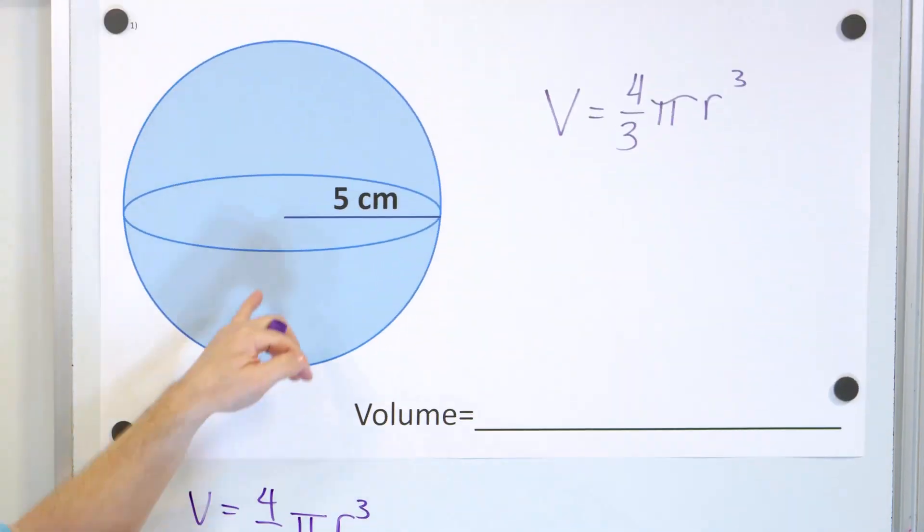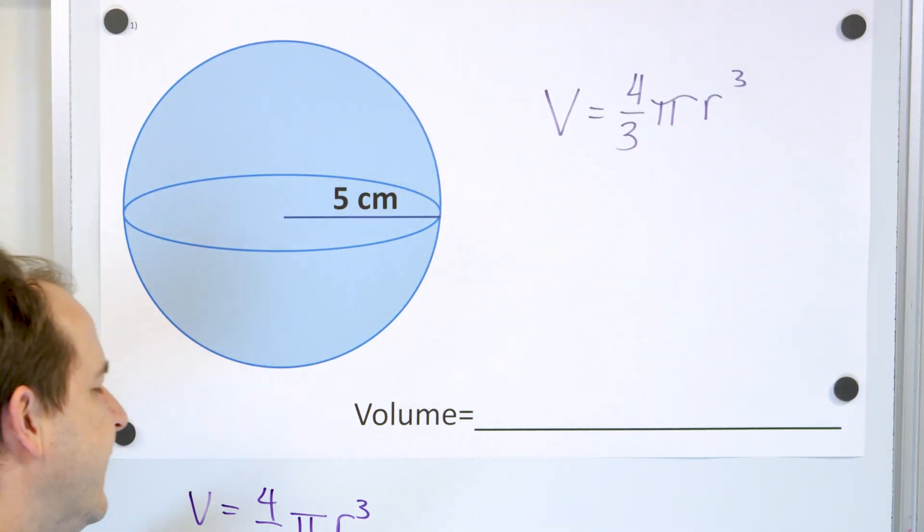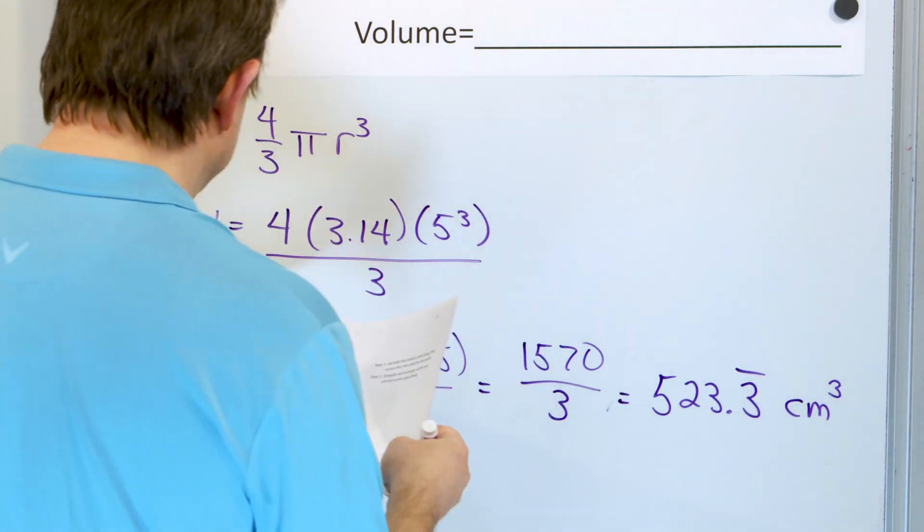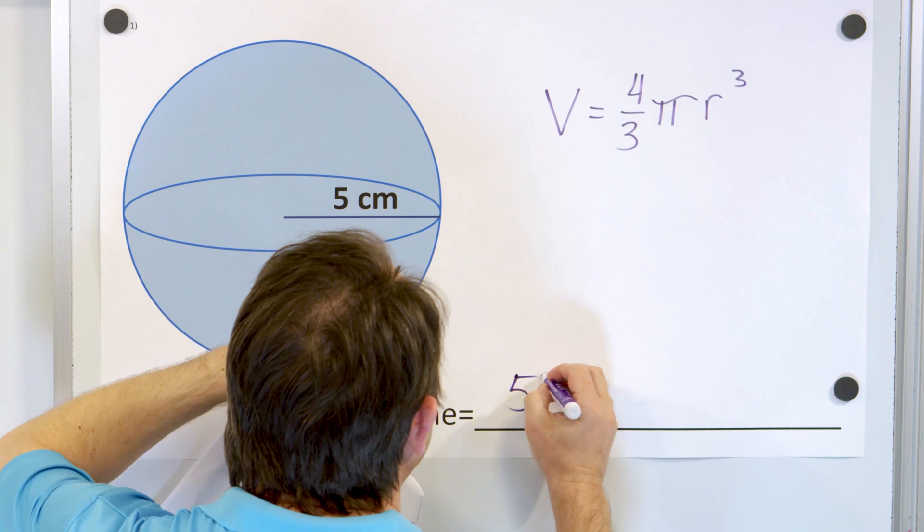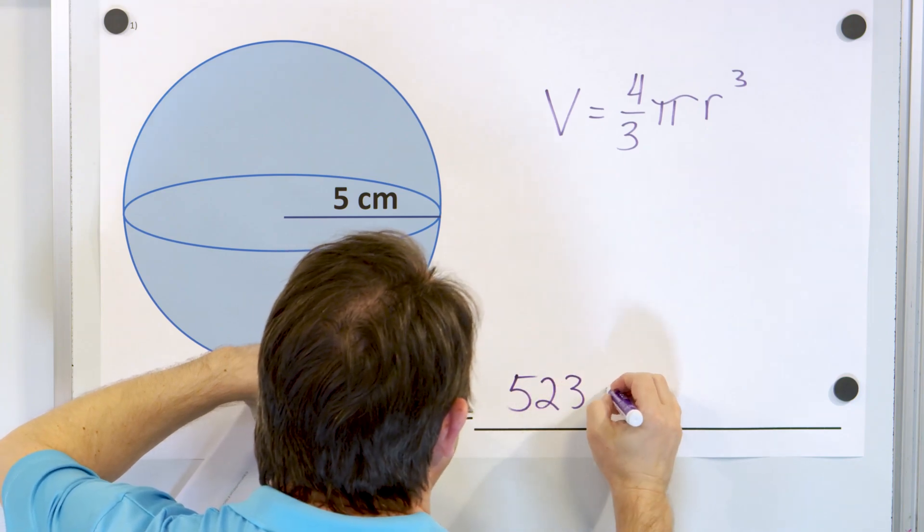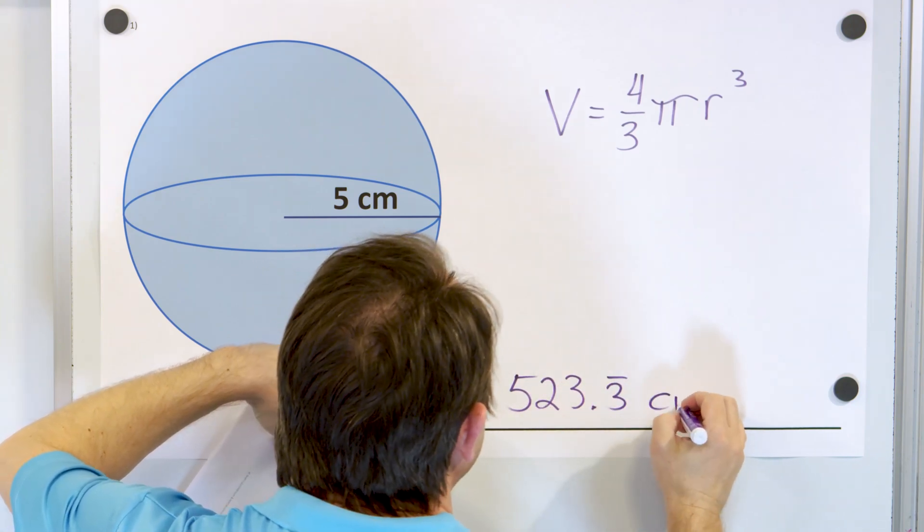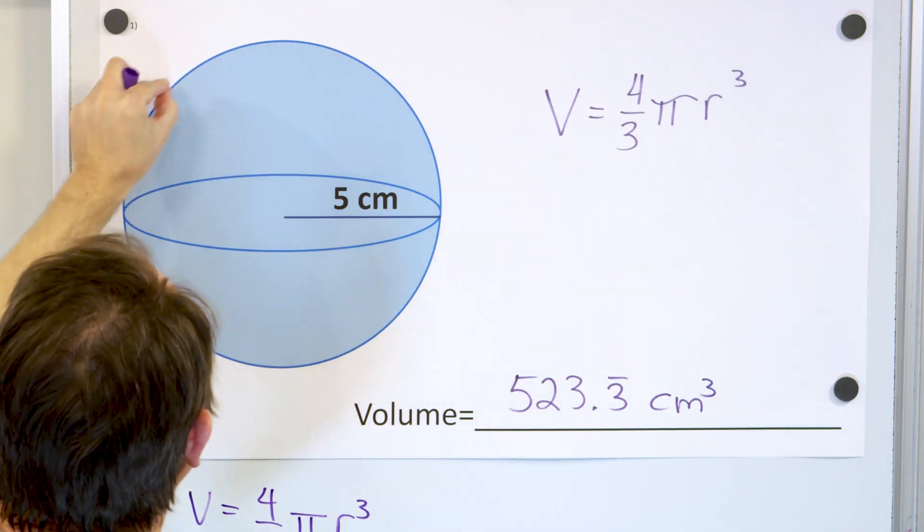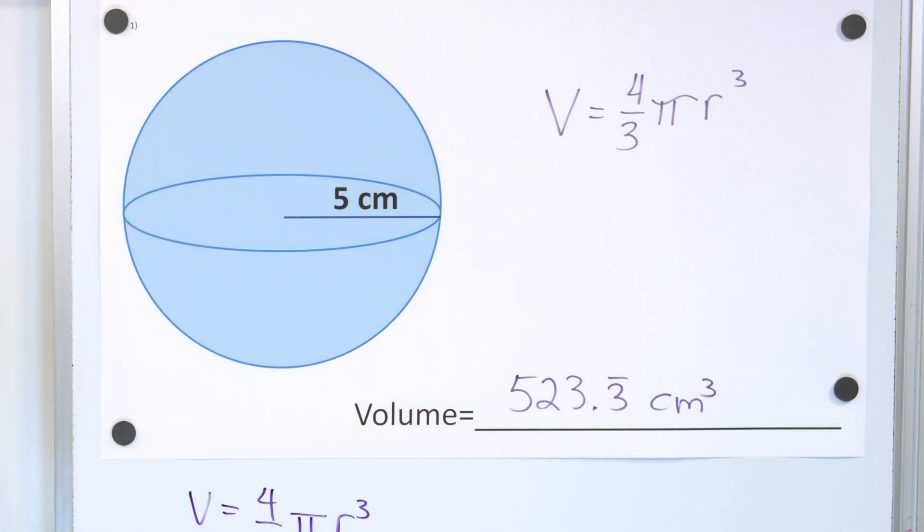What are the units? I measure this radius in centimeters, and since this is a volume, it's going to be cubic centimeters. So 523.3 with a repeating bar on the 3, cubic centimeters. That's how many little cubes each of a centimeter on each face would actually fit inside of this spherical shape.